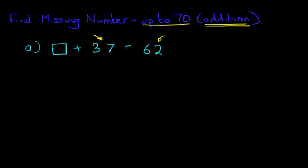Start with the units. We've got 7 units, and what do we need to get to? 2. If we're adding to 7, the next number with 2 units is 12. So what number added to the 7 is going to give us 12? The answer is 5. 7 plus 5 is 12, so we are carrying 1 over.